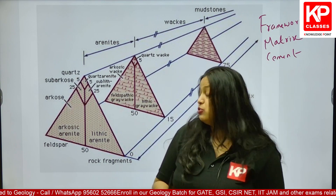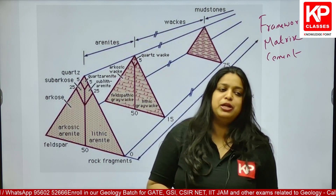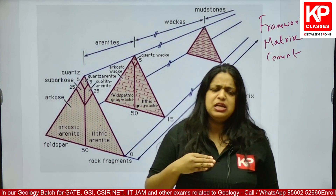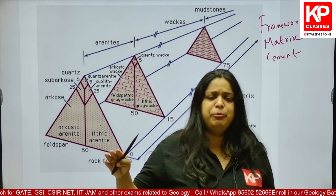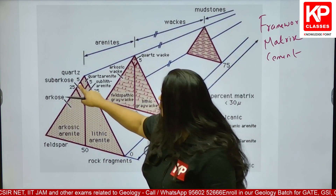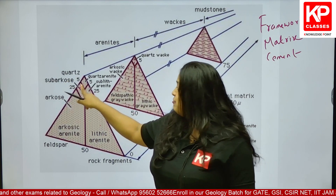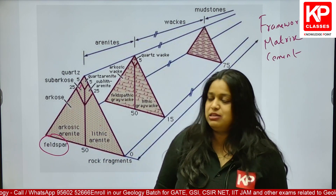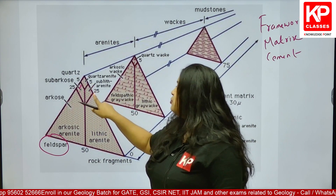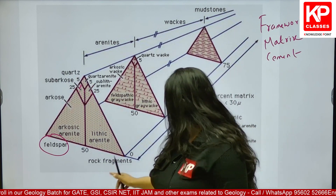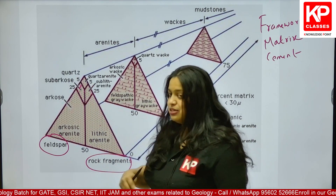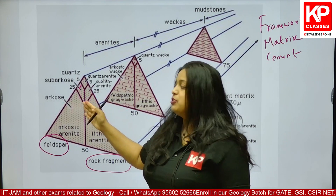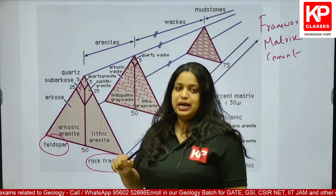When it comes to subarchos and sublithic arenite, more than 75% of the rock is quartz. But if 5–25% of the rock is composed of feldspar and the rest is quartz, we call it subarchos. If 5–25% of the rock is rock fragment and the remaining ~75% is quartz, we call it sublithic arenite.